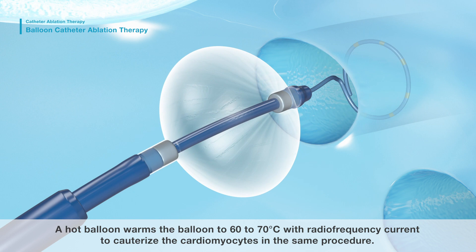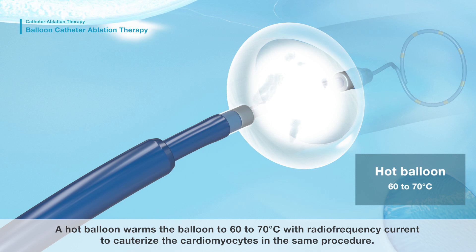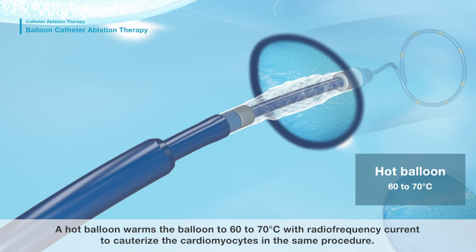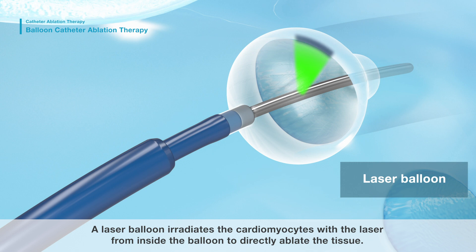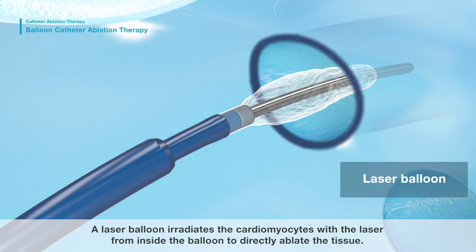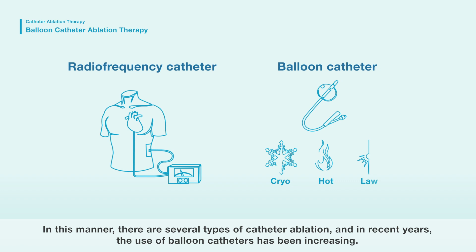A hot balloon warms the balloon to 60 to 70 degrees Celsius with radio frequency current to cauterize the cardiomyocytes in the same procedure. A laser balloon irradiates the cardiomyocytes with a laser from inside the balloon to directly ablate the tissue.